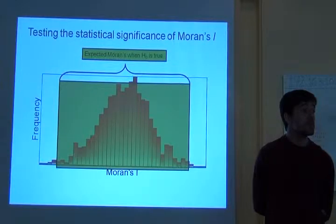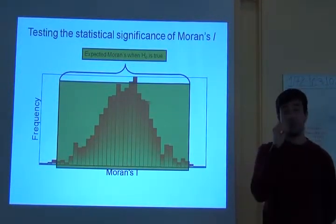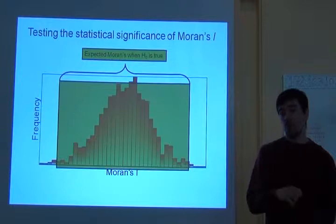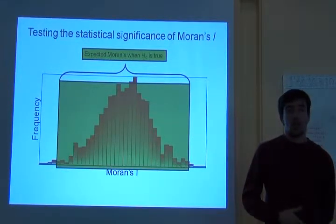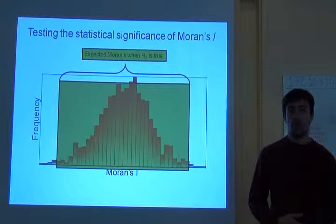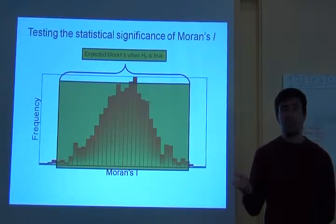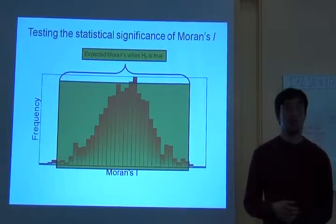From the statistical perspective, the only thing you can say is that the level of spatial autocorrelation is unlikely to be observed when there's no process affecting the spatial pattern — when there's only randomness. But because we are ecologists and we are not interested in the statistical perspective, we conclude that there is spatial autocorrelation.